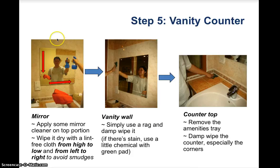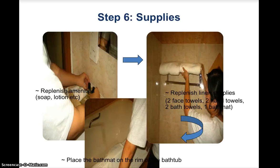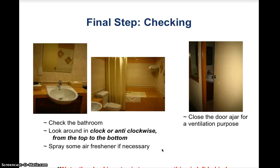For the toilet unit, open the WC bowl cover, scrub using the toilet brush, flush after scrubbing, and damp wipe the unit, water tank, seat, and base. For the vanity counter, clean the mirror top to bottom and left to right using mirror cleaner. Damp wipe the vanity wall and use a green pad with chemical to scrub any stubborn stains. Wipe the counter top dry. For the wash basin, scrub in circular motion with cream cleanser on a green pad, rinse thoroughly, and wipe immediately to avoid water marks. Replenish all amenities including soaps, lotion, shampoo, conditioner, towels, and bath mat. Wipe the floor from inside to outside, replace the rubbish bin, and do a final clockwise and anti-clockwise check of the bathroom.